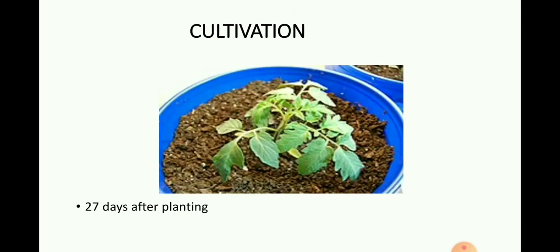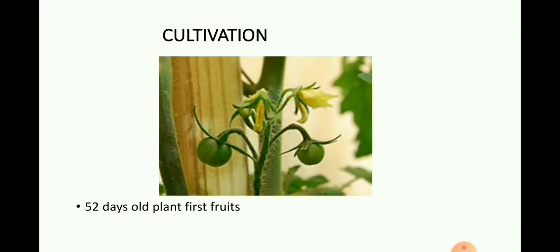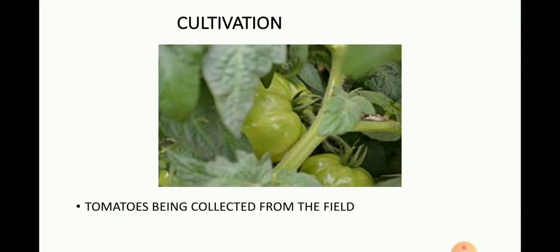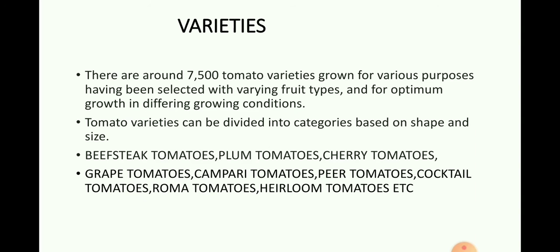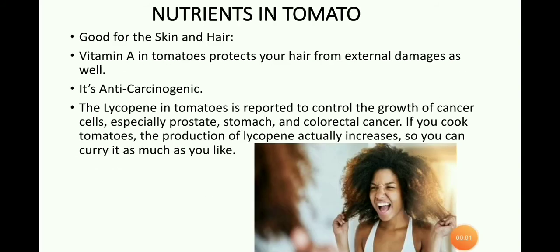Growth stages shown include plants 27 days after planting, 52-day-old plants, first fruits, and tomatoes being collected from the field. Varieties: There are around 7,500 tomato varieties, grown for various purposes and selected for varying fruit types and optimum growth in different conditions. Tomato varieties can be divided into categories based on shape and size: beef tomatoes, stick tomatoes, plum tomatoes, cherry tomatoes, grape tomatoes, Camperio tomatoes, pear tomatoes, cocktail tomatoes, Roma tomatoes, and heirloom tomatoes.